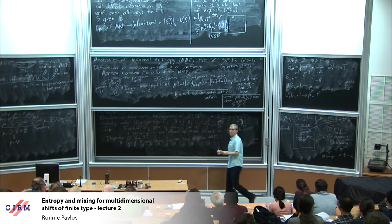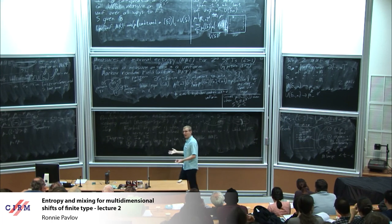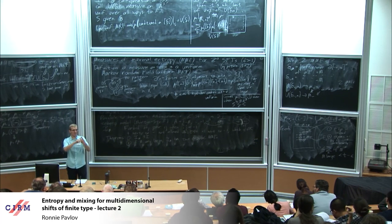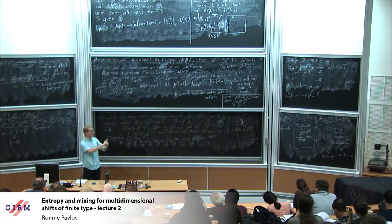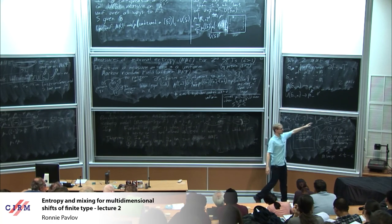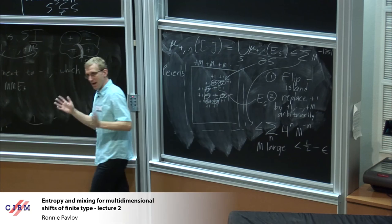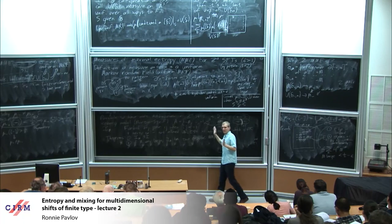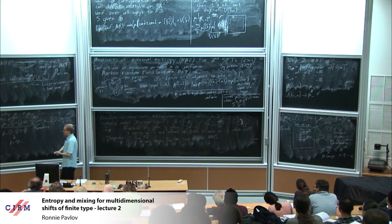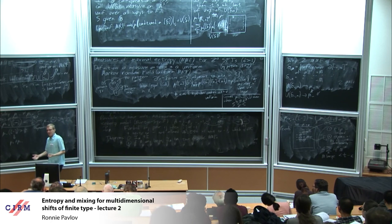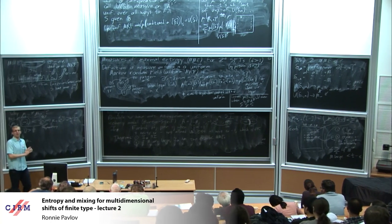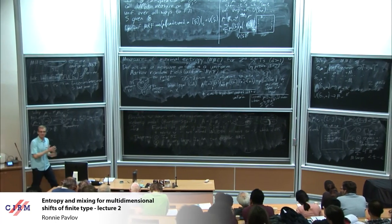This is a wonderful, beautiful argument called a Peierls argument. It's applicable to show non-uniqueness for a variety of systems. The idea is: you have an interface; the interface caused you to make some inefficient choices; you could make many more choices; and then you get some bounds like this. What we'll finally talk about next time is how to show that there's only one MME, and why any of you should care about having only one.